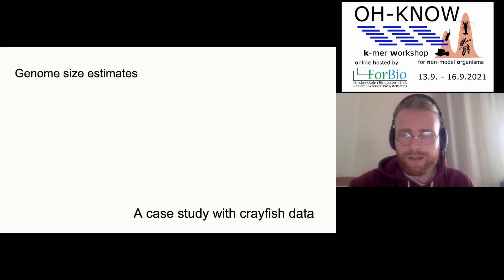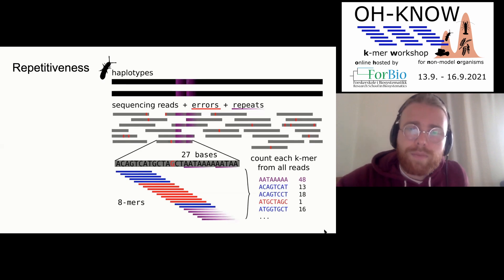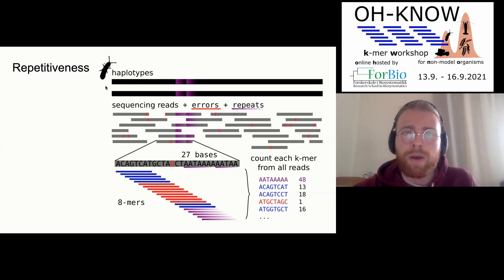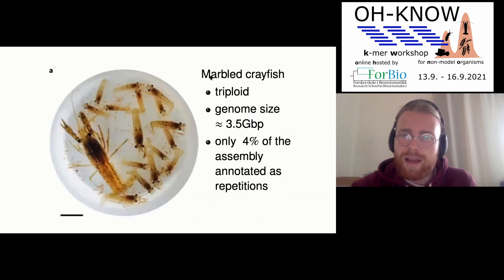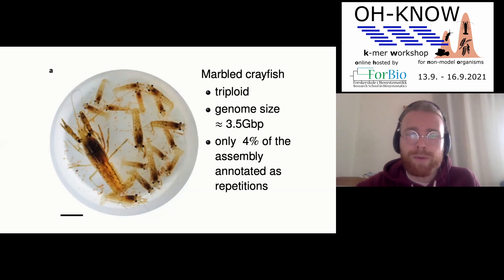I'll start with an example of something that is quite often done wrong especially on big genomes: genome size estimates. I'll give you a case study in crayfish data explaining why that happens. We already discussed that if you have multiple regions sharing the same sequence they multiply the k-mer coverage, but we haven't said that these regions can appear in hundreds of thousands of places inside the genome. That's the story of the marbled crayfish — a clonal species constructed by German aquarists that escaped from aquariums and spread across the globe.